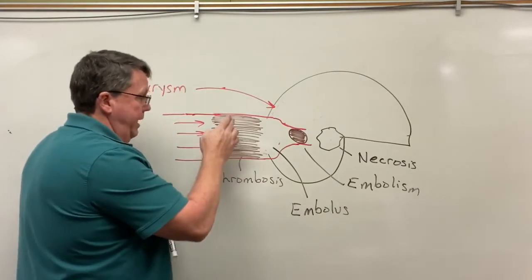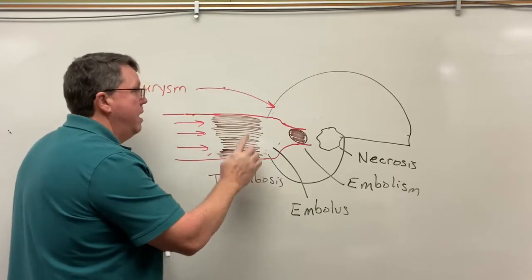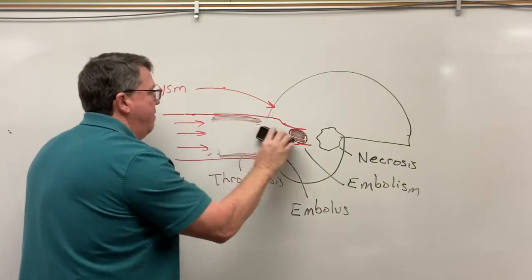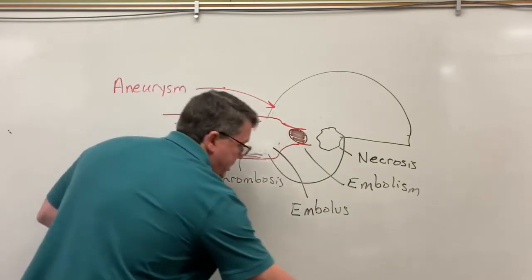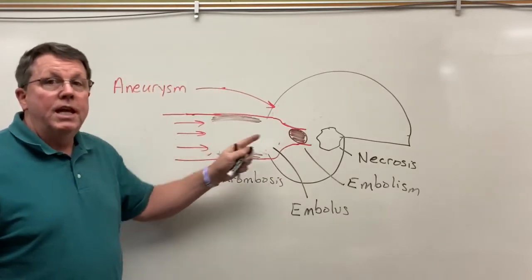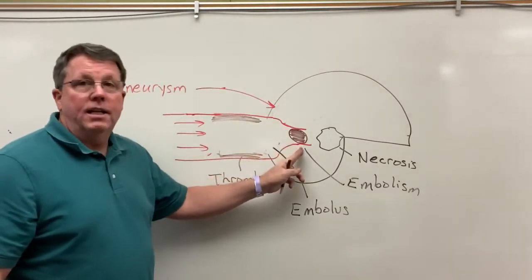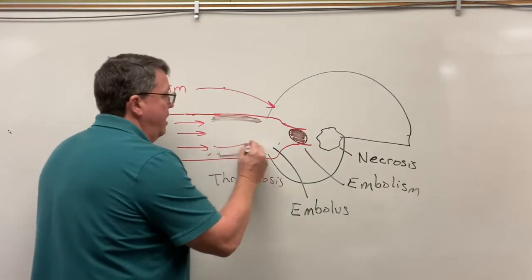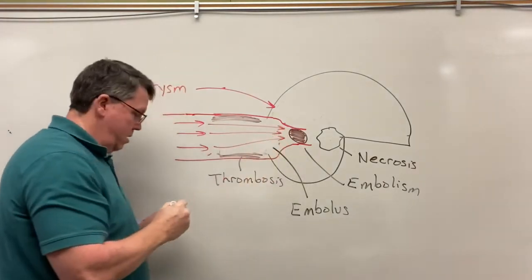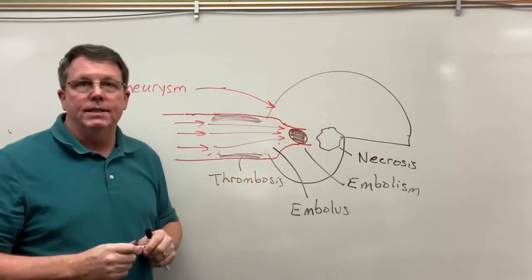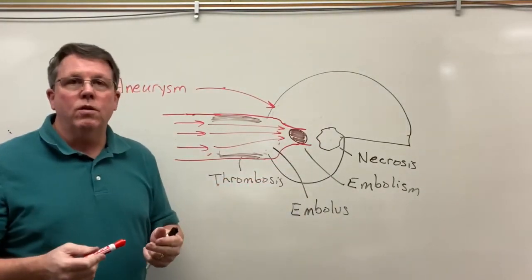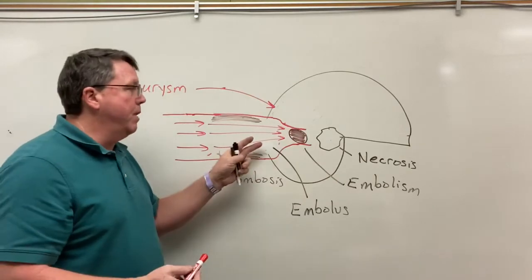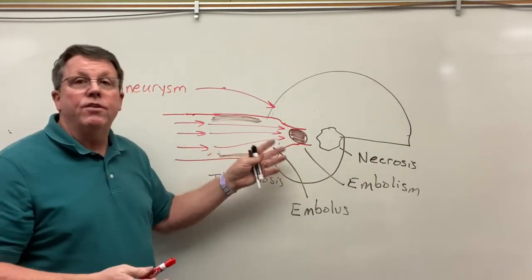Similarly, something can break off somewhere else in the body, travel in the blood, get stuck in the brain, and block blood flow — once again causing necrosis. In an ischemic stroke the blood supply is cut off due to blockage; in a hemorrhagic stroke the blood supply is decreased or cut off due to a hemorrhage in a blood vessel.